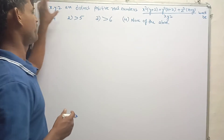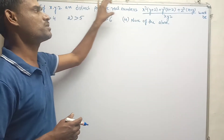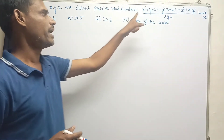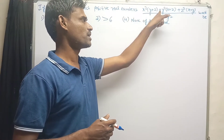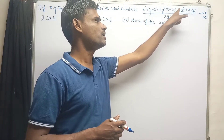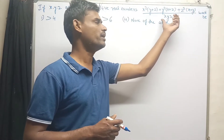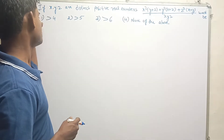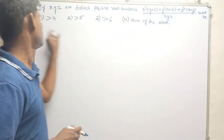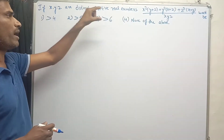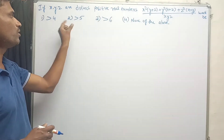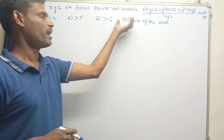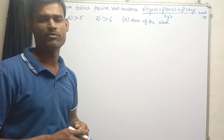The question is: if x, y, z are distinct positive real numbers, then what would be the value of x squared into y plus z, plus y squared into x plus z, plus z squared into x plus y, divided by xyz? Some options are given: option 1, the value would be greater than 4; option 2, greater than 5; option 3, greater than 6; and the fourth option is none of the above.